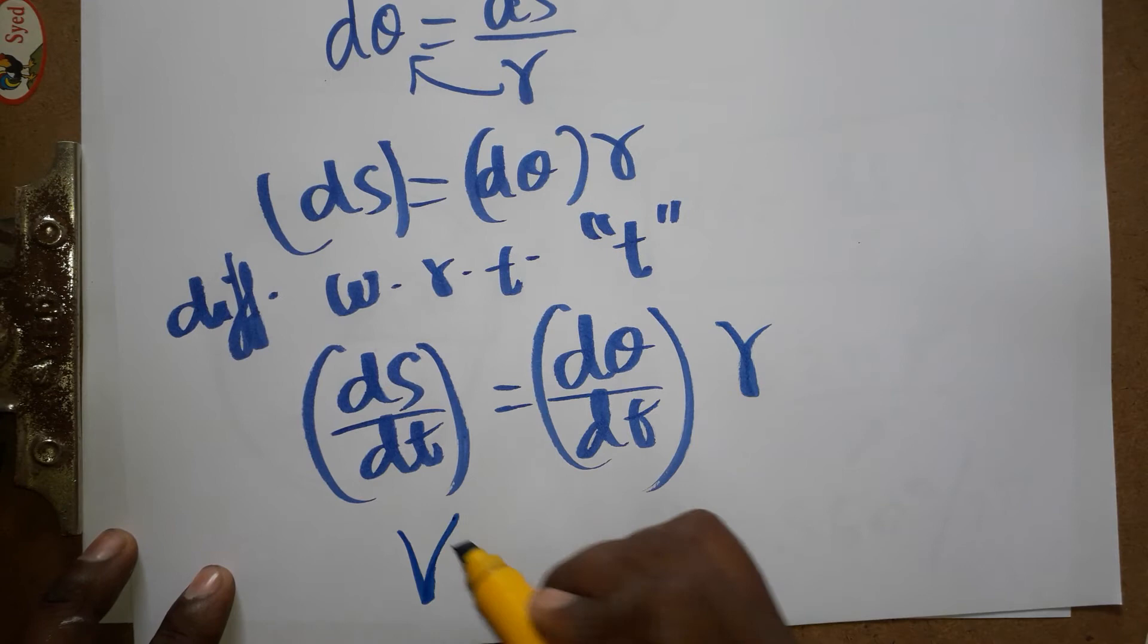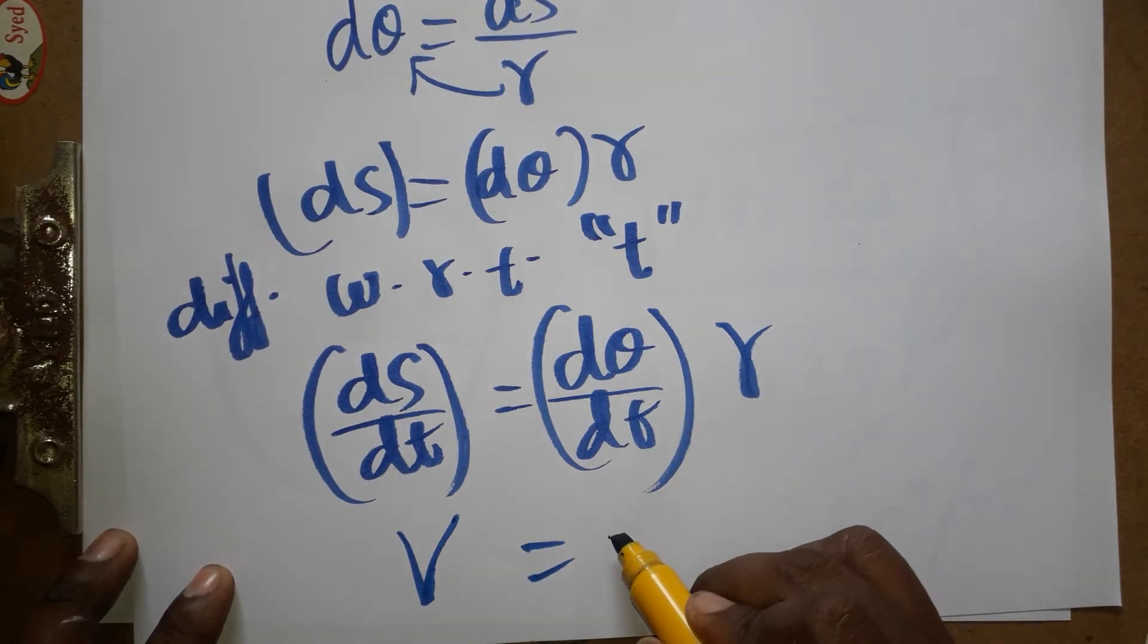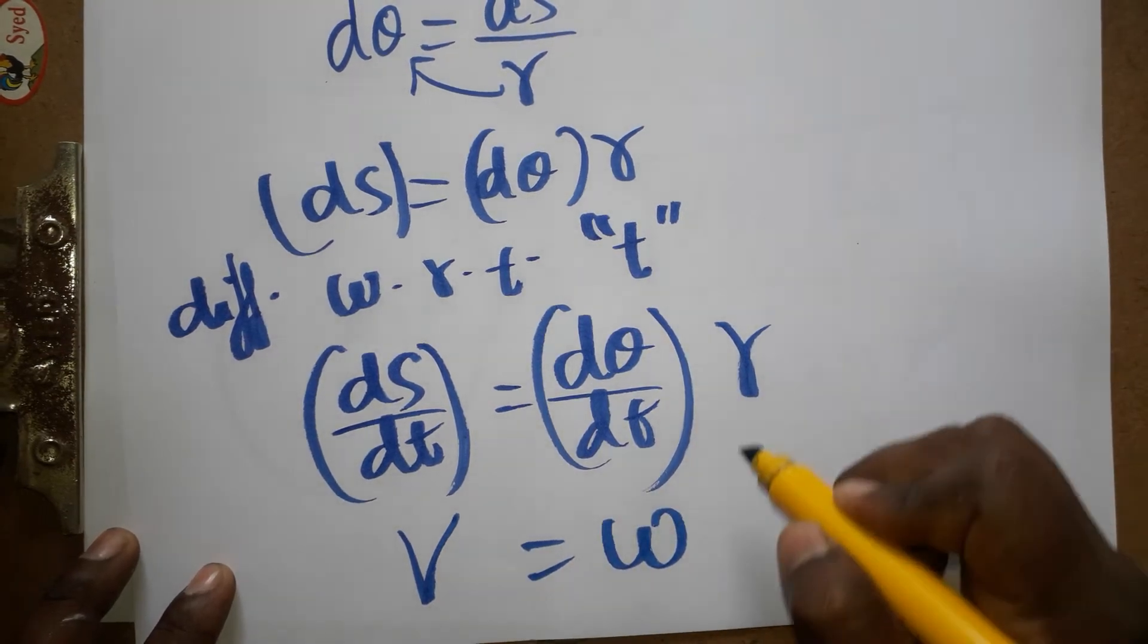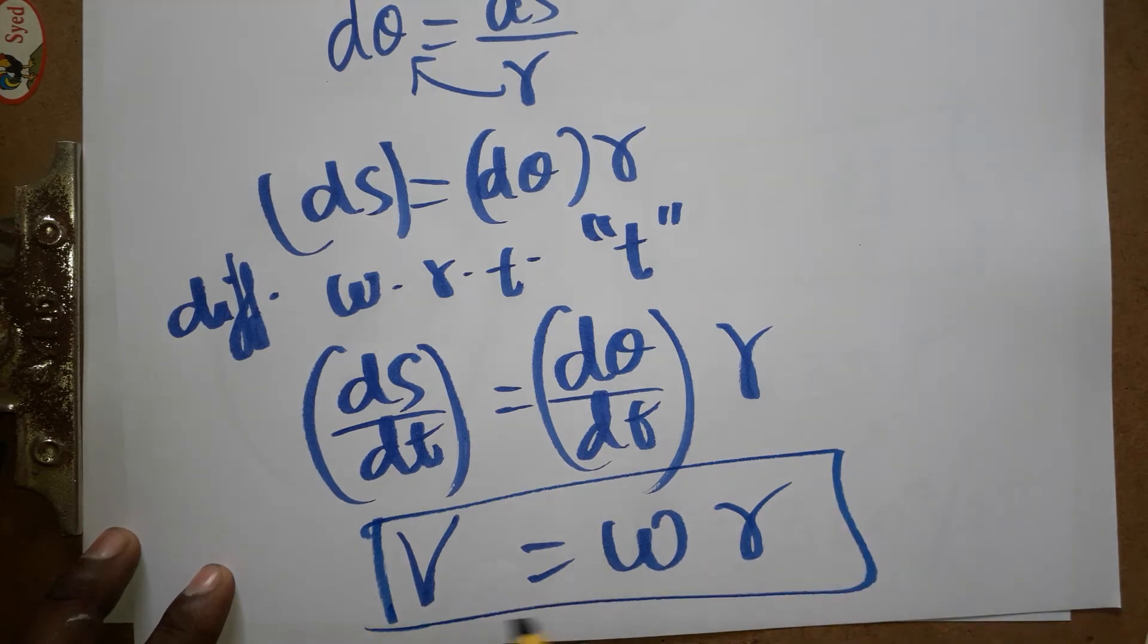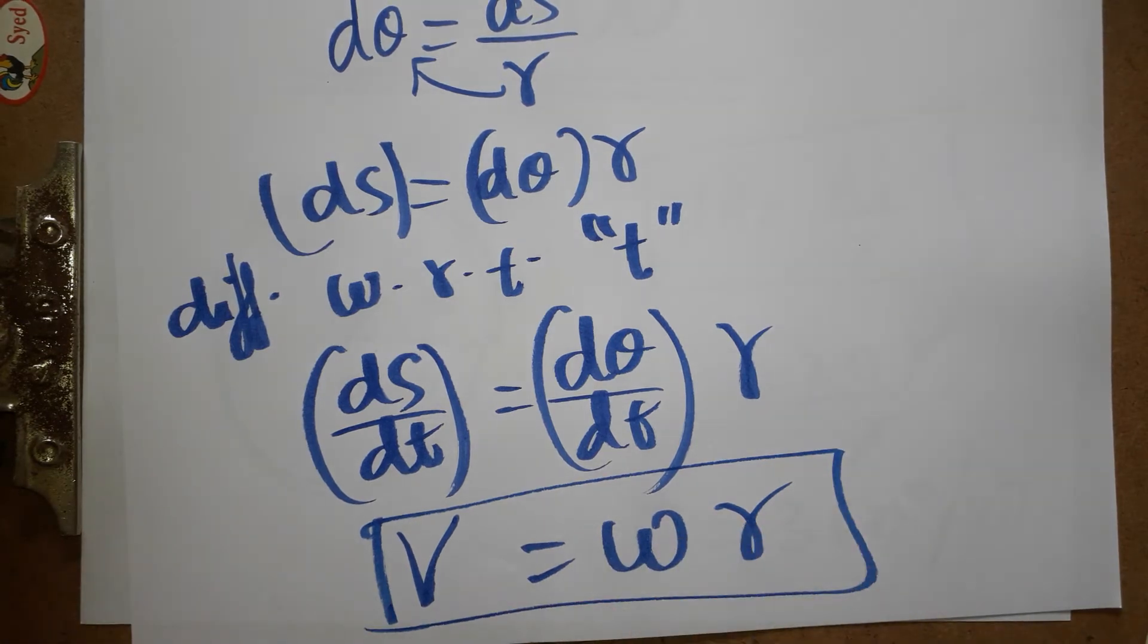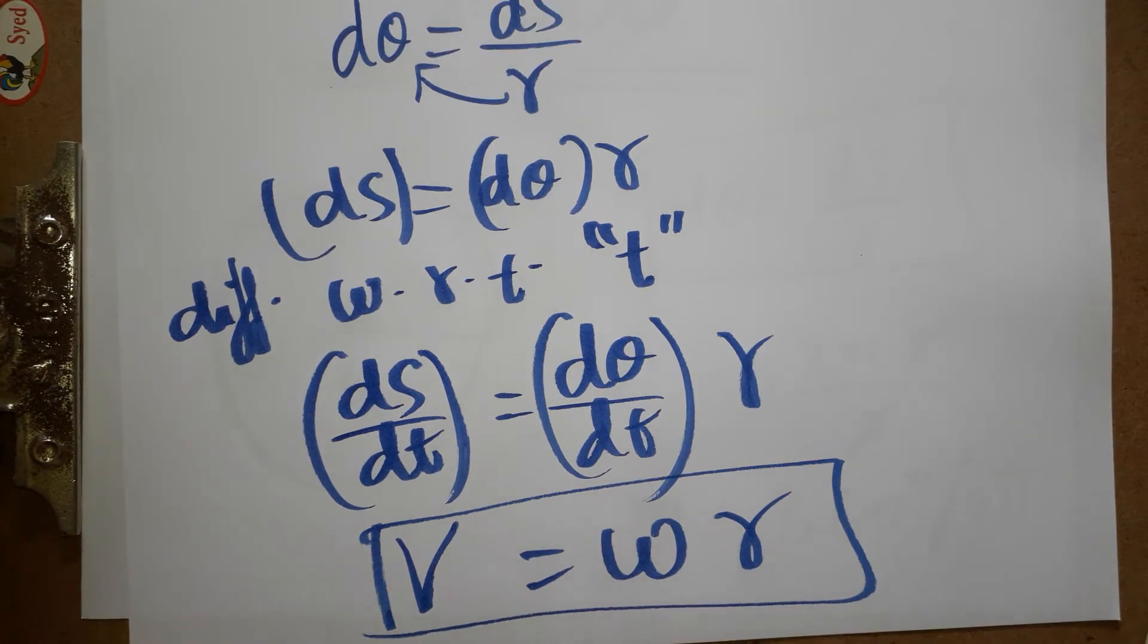So we got v = ωr. Again I am going to differentiate this equation, we will get the relation between α and a. What is the relation between α and a?